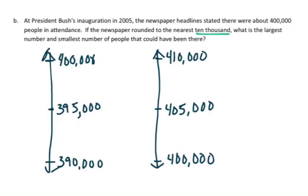We want to know what the smallest number of people that could have been there and the largest number of people could have been there. If I'm looking at this first place value chart and what I know about rounding numbers, if it was 395,000, it would round up to 400,000. But if it was 394,999, it would round down. So the smallest number we could have would be 395,000.